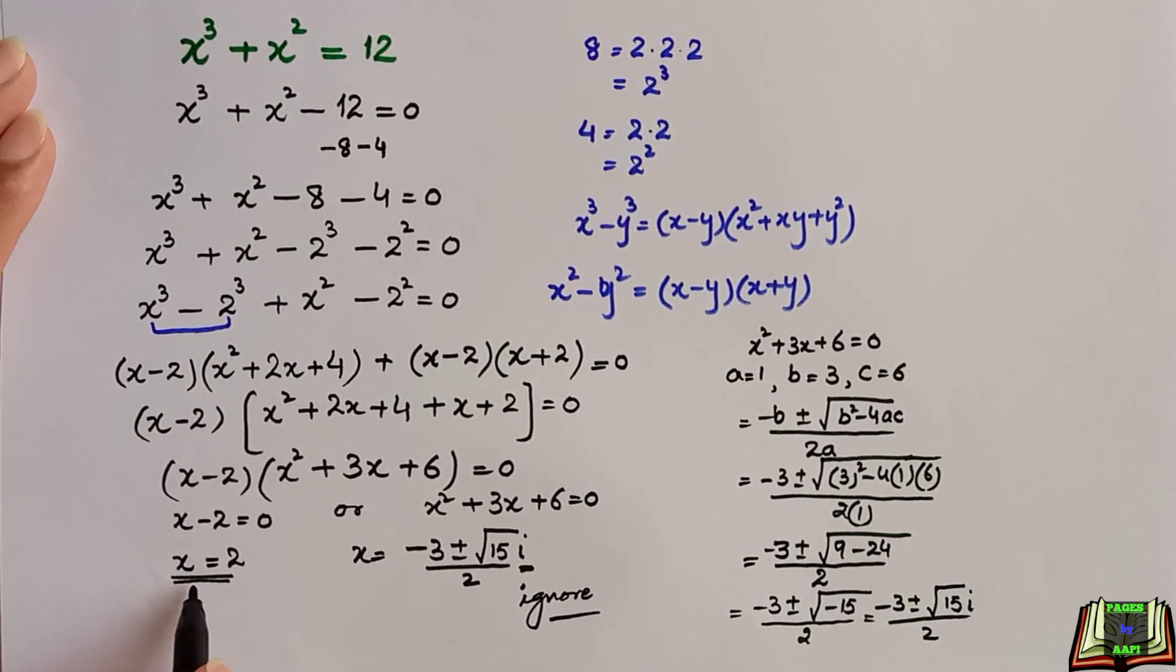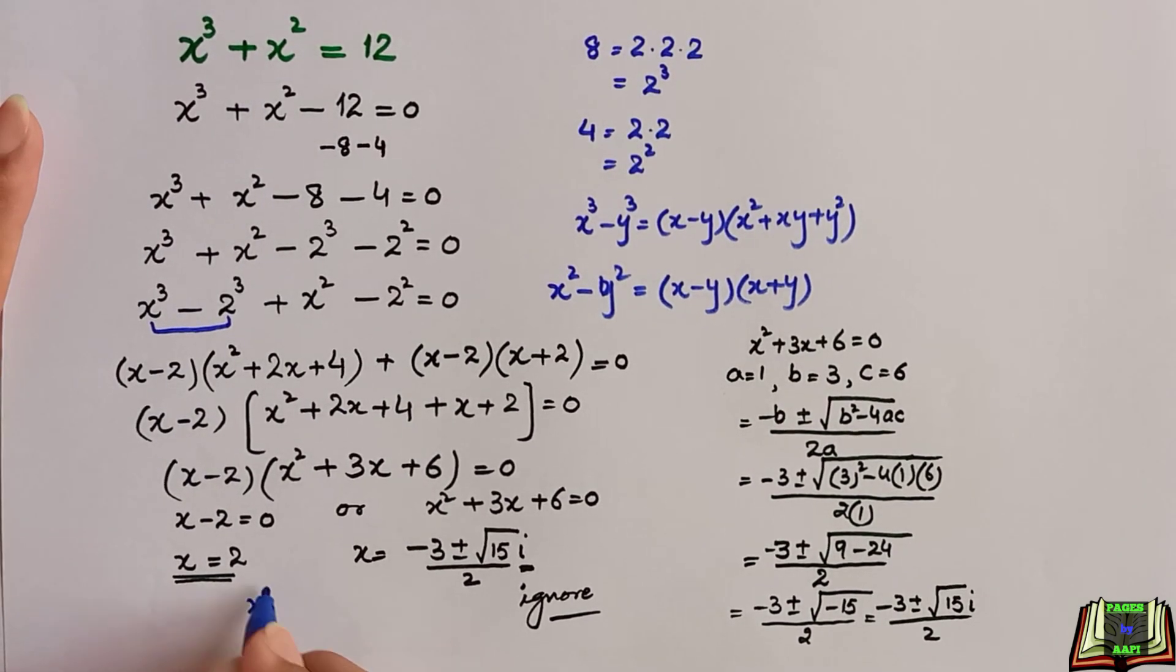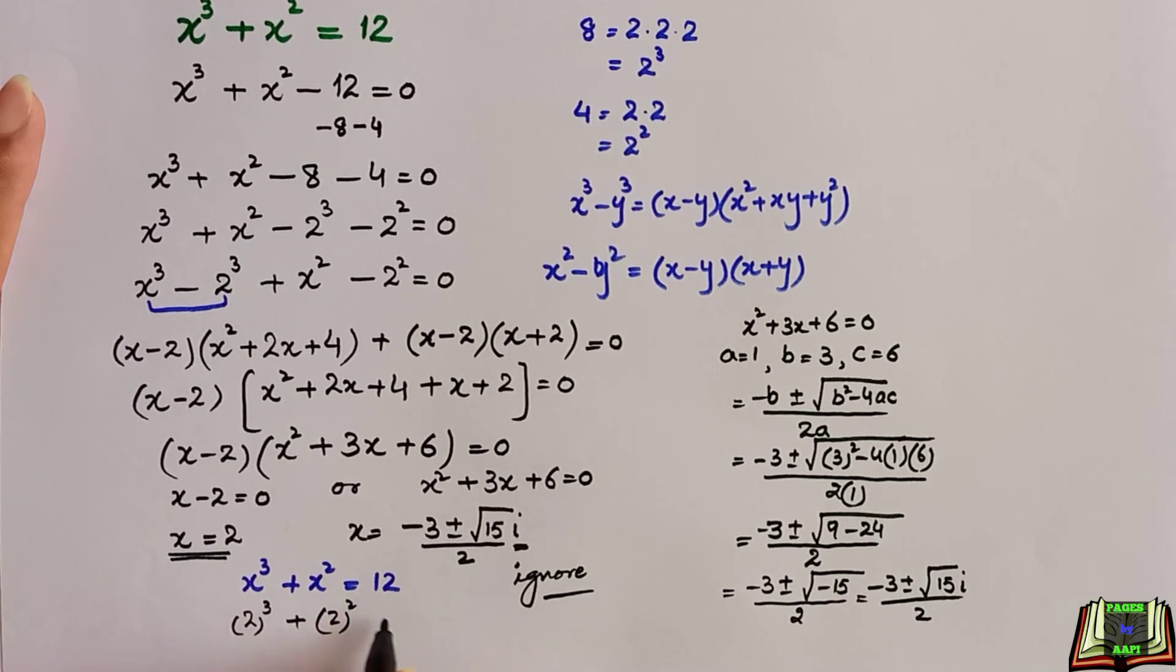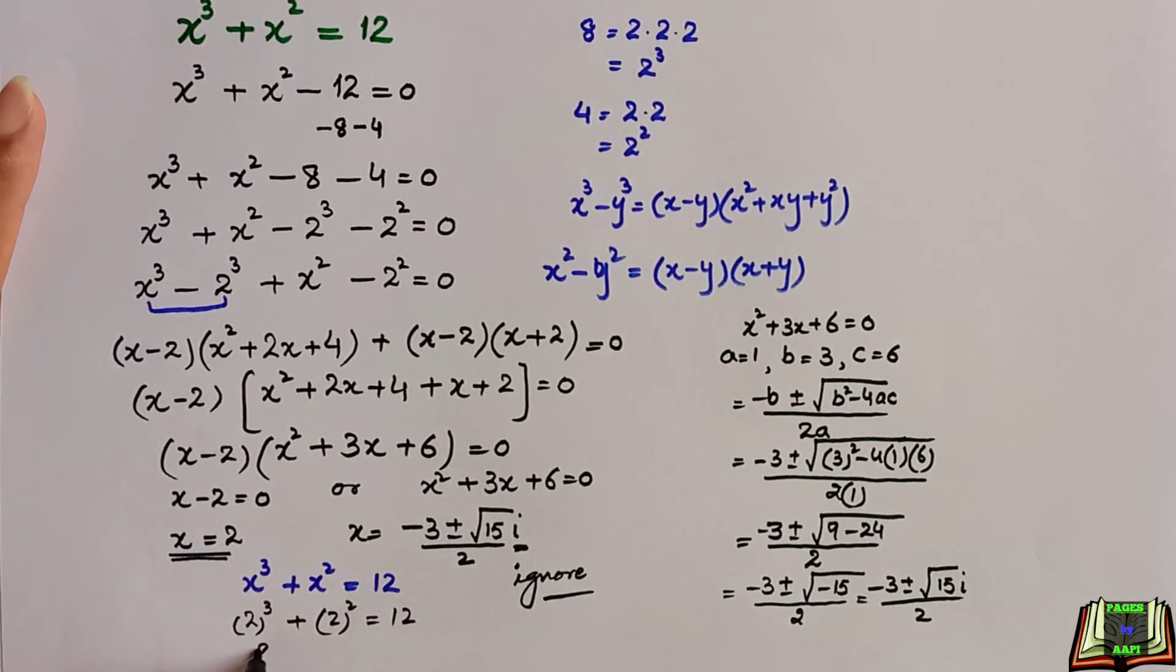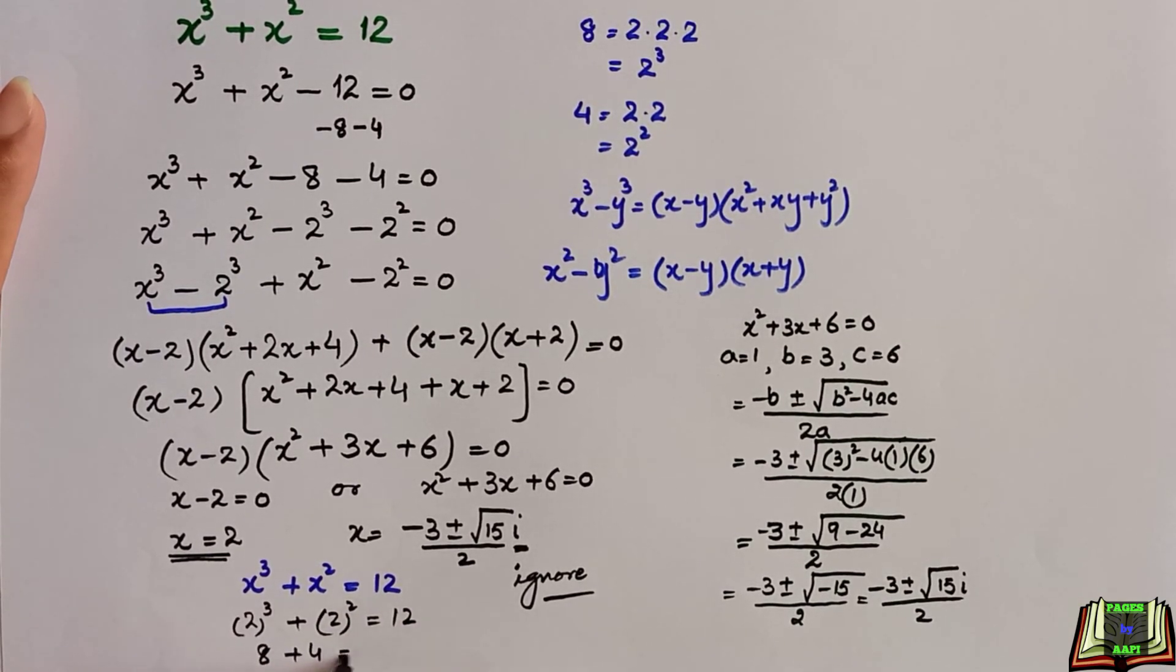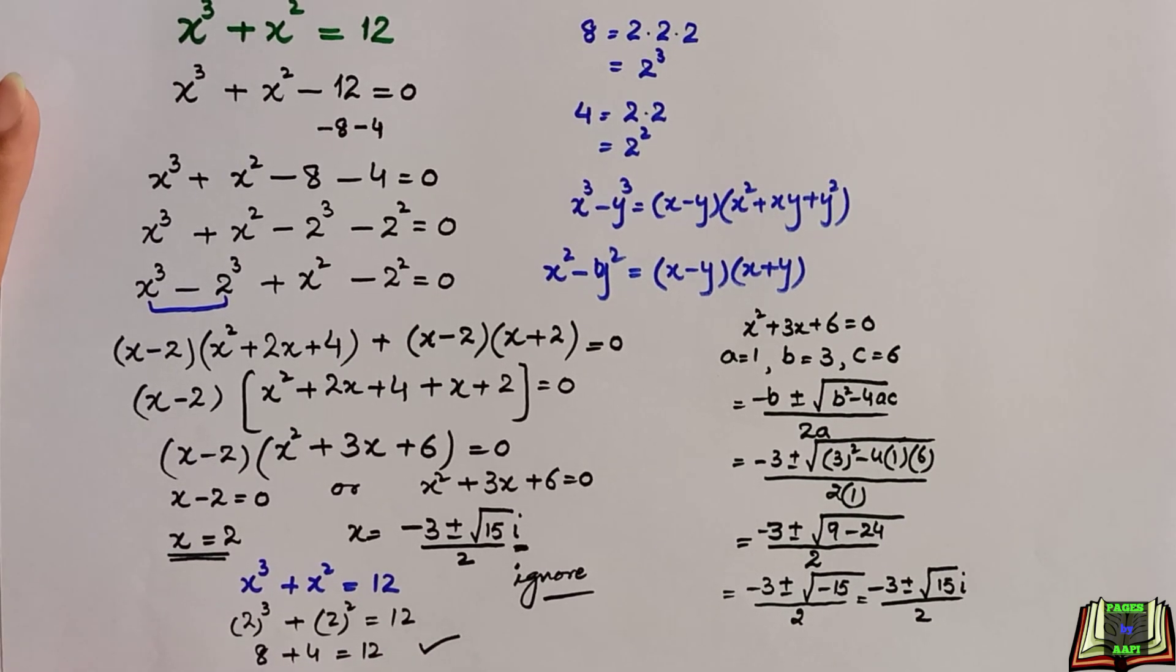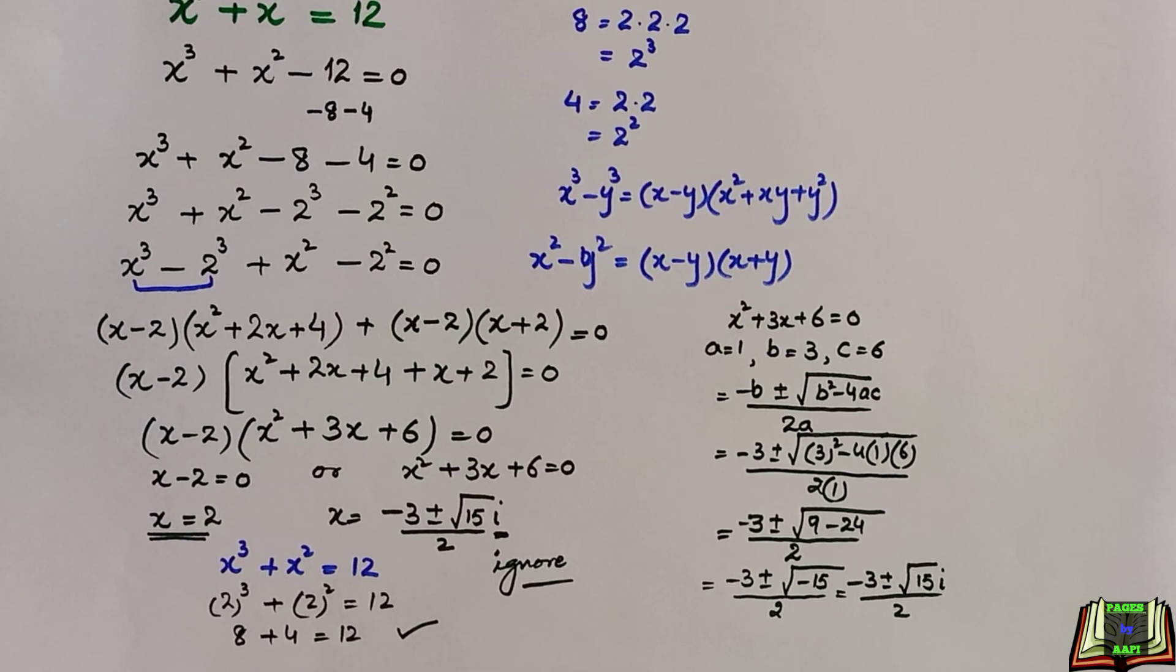But to check that it is the correct answer or not, we are going to do another step. We are going to put the value of x in the original equation. Here x is equal to 2, so 2 cube plus 2 square equals 12. 2 cube is 8 and 2 square is 4. So as left hand side and right hand side both are equal, it means we got the right solution.